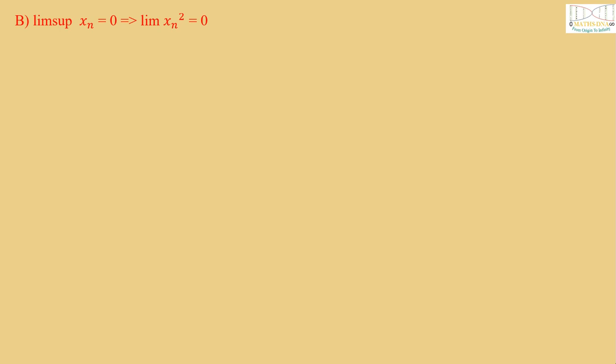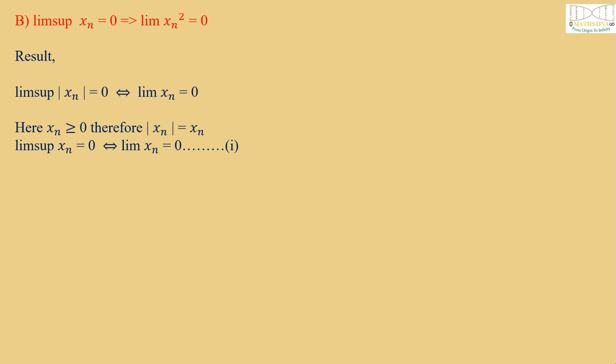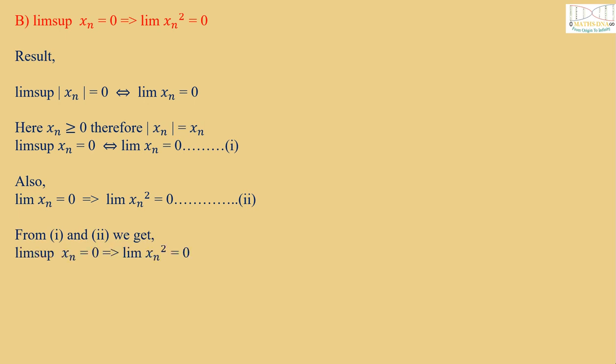Now for Option B: limit supremum Xn = 0 implies limit Xn² = 0. We need to study a result for this. The result is: limit supremum |Xn| = 0 if and only if limit Xn = 0. Since Xn are non-negative terms, |Xn| can be replaced by Xn. Therefore we get limit supremum Xn = 0 if and only if limit Xn = 0 — call this equation 1. Also we know that limit Xn = 0 implies limit Xn² = 0 — equation 2. From equations 1 and 2, limit supremum Xn = 0 implies limit Xn² = 0. Therefore Option B is true.